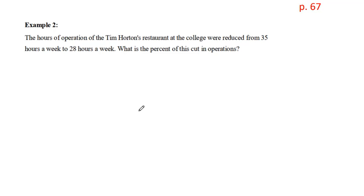Example two, the hours of operation of the Tim Hortons restaurant at the college were reduced from 35 hours a week to 28 hours a week. This is a percent of decrease question, but we still follow the same steps. Step one, we subtract the 35 minus the 28, giving us a 7-hour difference.